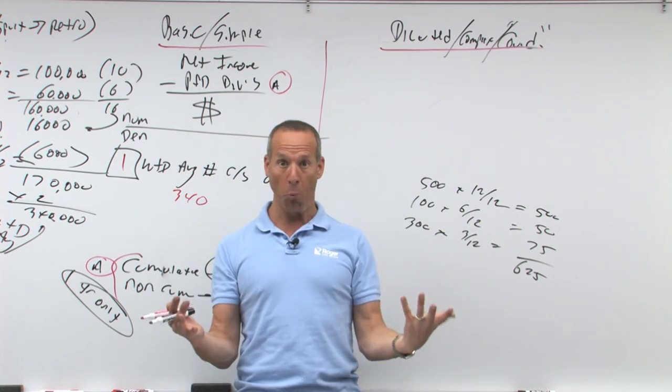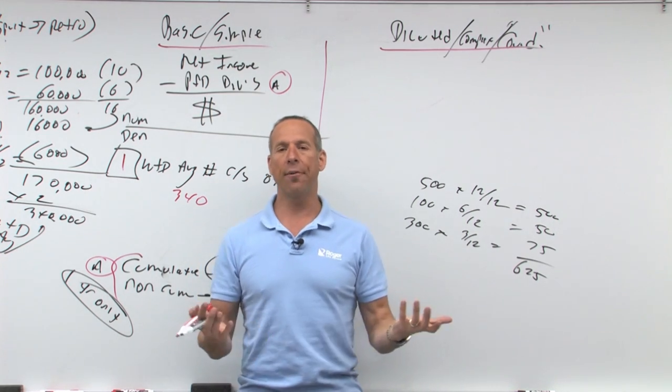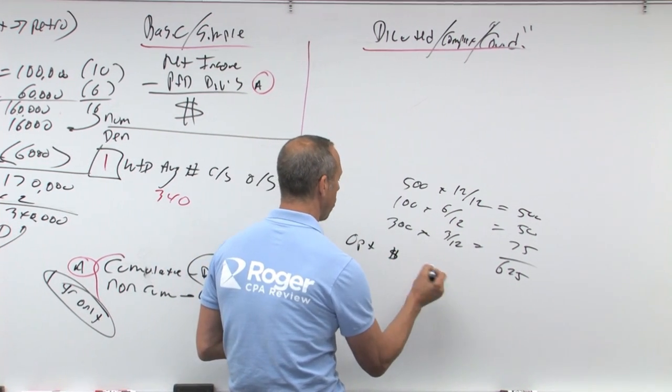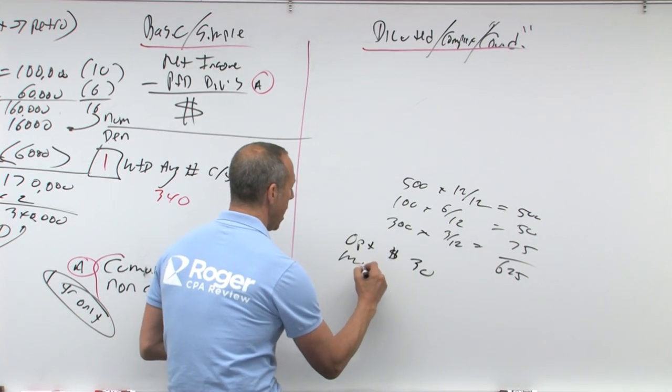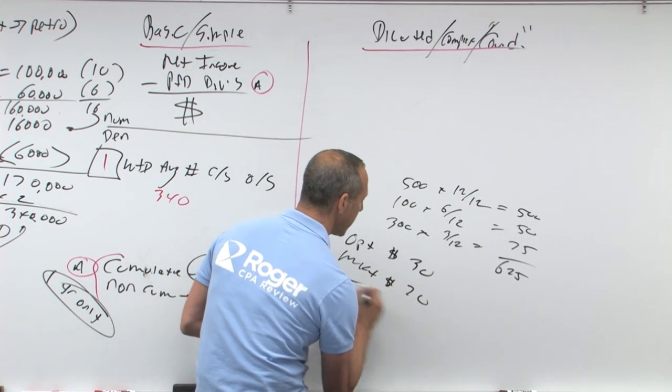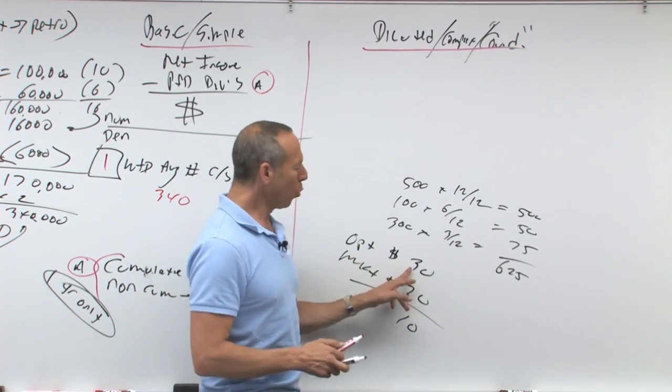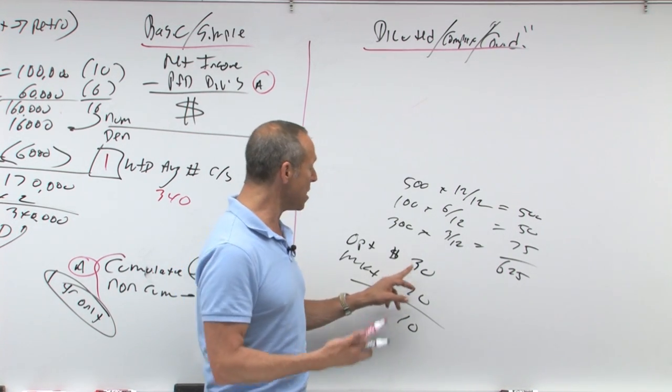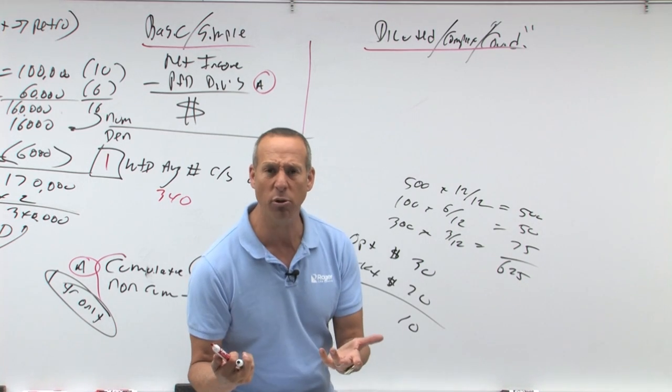We don't assume you're a moron unless you really are. So in other words, if the option, let's say we had stock options. Let's say the option price was $30 a share and the market price was $20 a share. Would you exercise that option? No. Why not? Because you're going to give me more and get less, that's anti-dilutive.